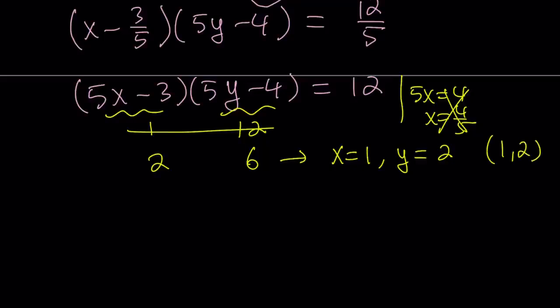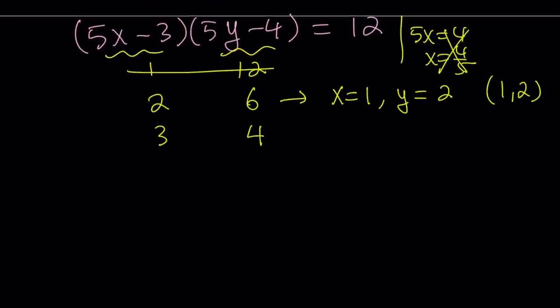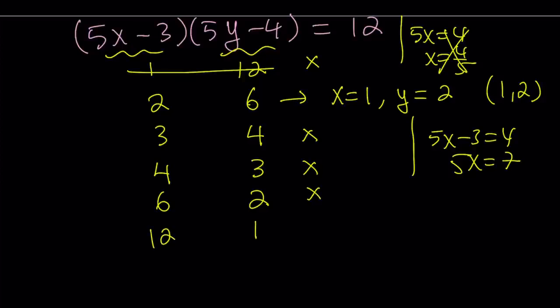Let's continue doing this and then see if there's any other solutions. I'm going to go with 3 and 4 but 5x minus 3 equals 3 gives me 5x equals 6. x is not going to be an integer. So, I'm just going to put an x there which means we don't get any integers. 4 and 3 is not going to give me any integers either because 5x minus 3 equals 4, 5x equals 7. That's not good. So, that's an x. How about 6 and 2? That's not going to work. Notice you can do this mentally. 5x equals 9. That's no good.